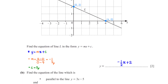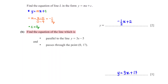Find the equation of the line parallel to y = 3x − 5 that passes through (0, 17). The gradient of y = 3x − 5 is 3. Since parallel lines have equal gradients, and the y-intercept is 17, the equation is y = 3x + 17.